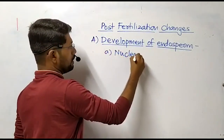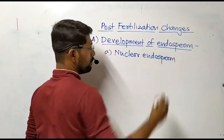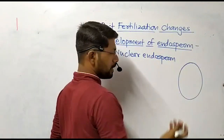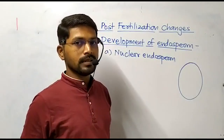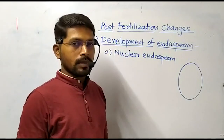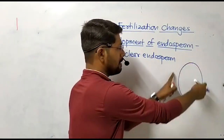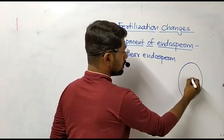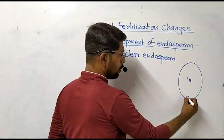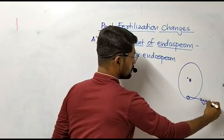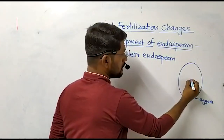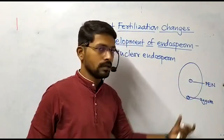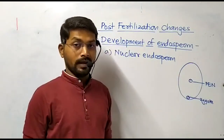The first type is nuclear endosperm. Before that, we have already studied that in the course of double fertilization, the zygote is produced at the micropylar end because the egg apparatus is present there. The primary endosperm nucleus is developed at the center because the central cell consists of the secondary nucleus — these are two polar nuclei fusing with a single male gamete. The zygote is formed at the micropylar end, and triple fusion occurs at the center, producing the primary endosperm nucleus.